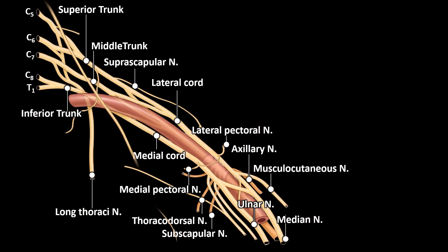Blockade of the brachial plexus effectively provides anesthesia to the upper limb, from the shoulder to the fingertips. Approaches to blocking the brachial plexus depend on the indication, planned surgery or procedure, patient-specific body habitus, medical comorbidities, and individual anatomical variants.